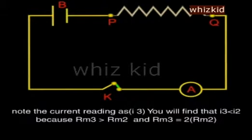Note the current readings as I3. You will find that I3 is less than I2 because RM3 is greater than RM2 and RM3 is equal to 2 into RM2.